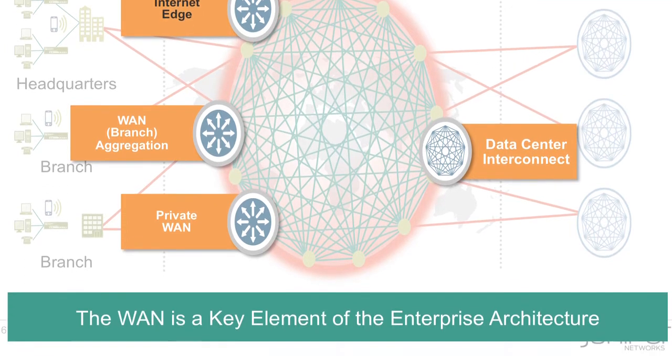The WAN is the critical network glue that holds and connects your enterprise. The Internet Edge acts as the boundary between your enterprise networks, resources, assets, and the public internet. Internal users can access the internet, or external parties can access your corporate resources through this gateway or boundary.